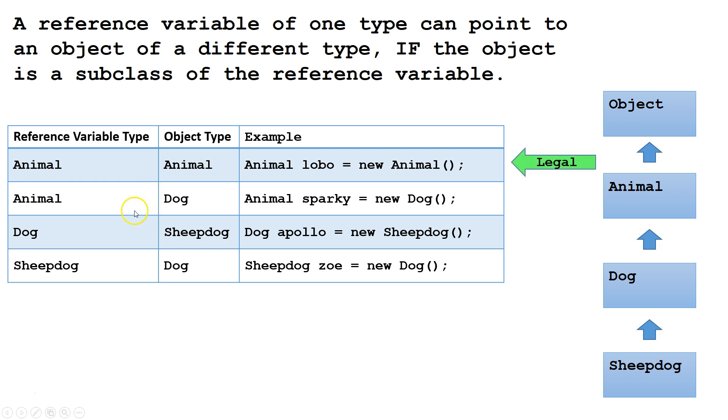Next, let's look at another example. We have a reference variable Animal and an object type Dog. This is fine because the object Dog is a subclass of the reference variable type Animal.